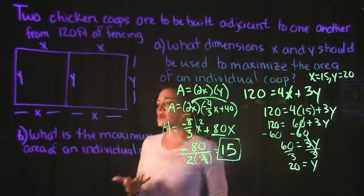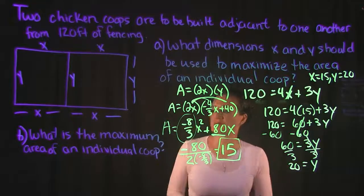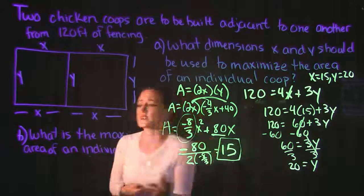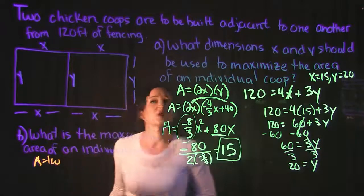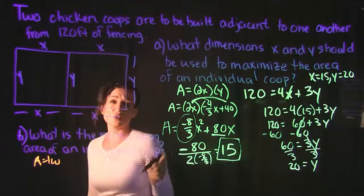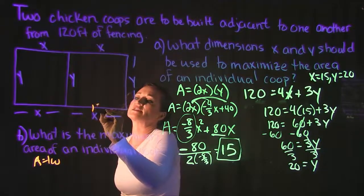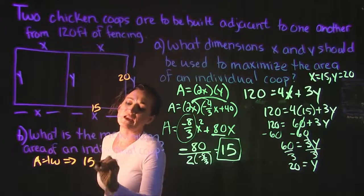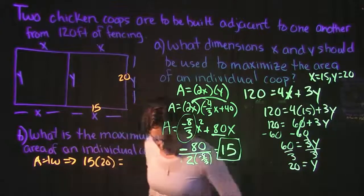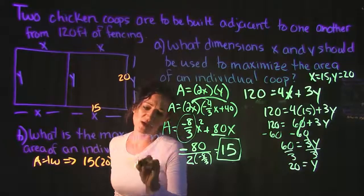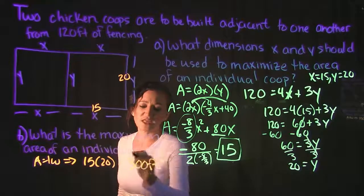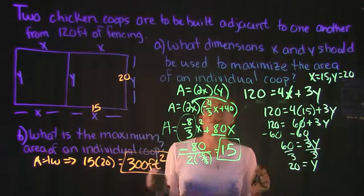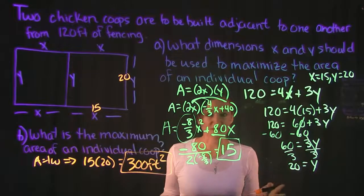For part B, we need the maximum area of an individual coop. Area of a rectangle is length times width. Each individual coop has dimensions X by Y — that is 15 by 20. So the maximum area is 15 times 20, which equals 300 square feet. One chicken coop has a maximum area of 300 square feet with dimensions 15 by 20.